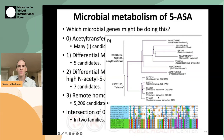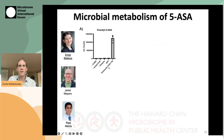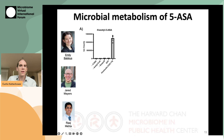Raj went on to experimentally validate both of these — looking specifically at the Firmicutes example here, but he's done the same experiments for the Bacteroidetes gene family. When expressed either heterologously or in a cell-free system, the enzyme is able to convert 5-ASA to the inactivated N-acetyl form only when the 5-ASA substrate, an acetyl-CoA cofactor, and the enzyme are all present. We got a similar result for one of the Firmicutes family members and for one of the Bacteroidetes family members.